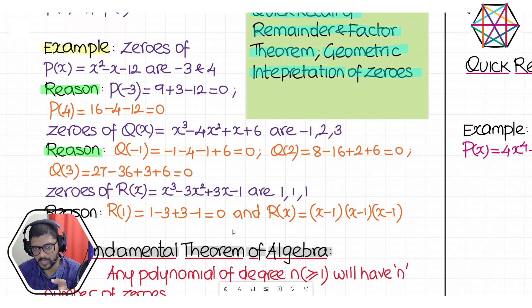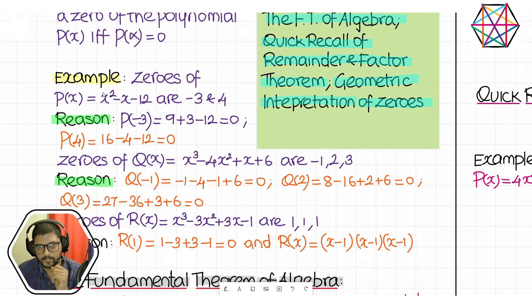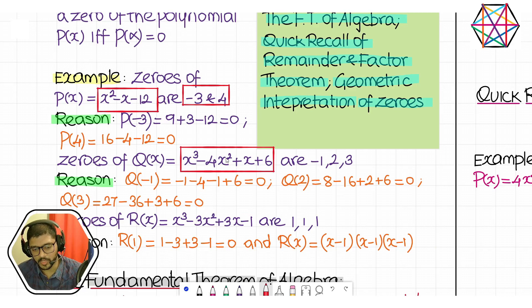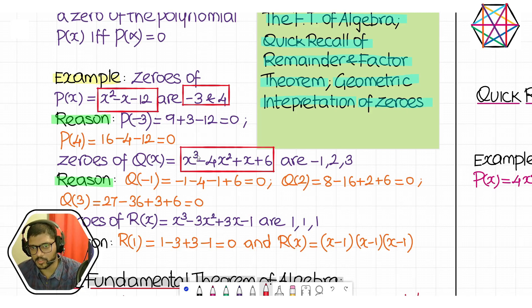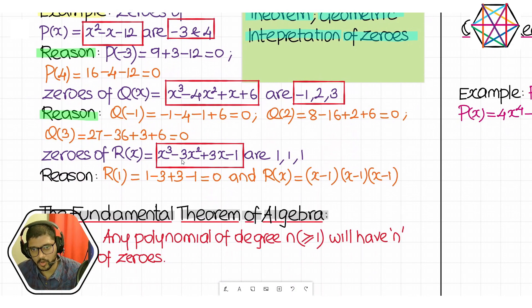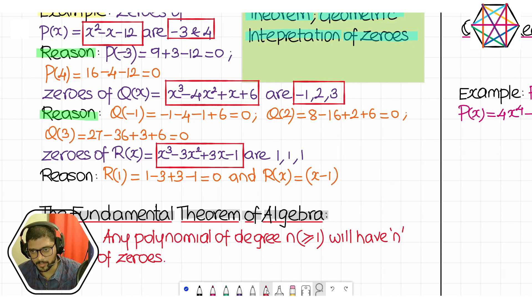Let's try to understand the statement using some examples. What is the degree of p(x) = x² − x − 12? The degree is clearly 2, and there are two zeros — that matches. What is the degree of q(x) = x³ − 4x² + x + 6? The highest power with a non-zero coefficient is 3, so the degree is 3, and there are three zeros. Now here the degree of r(x) = x³ − 3x² + 3x − 1 is also 3. Applying the algebraic identity, r(x) = (x − 1)³.